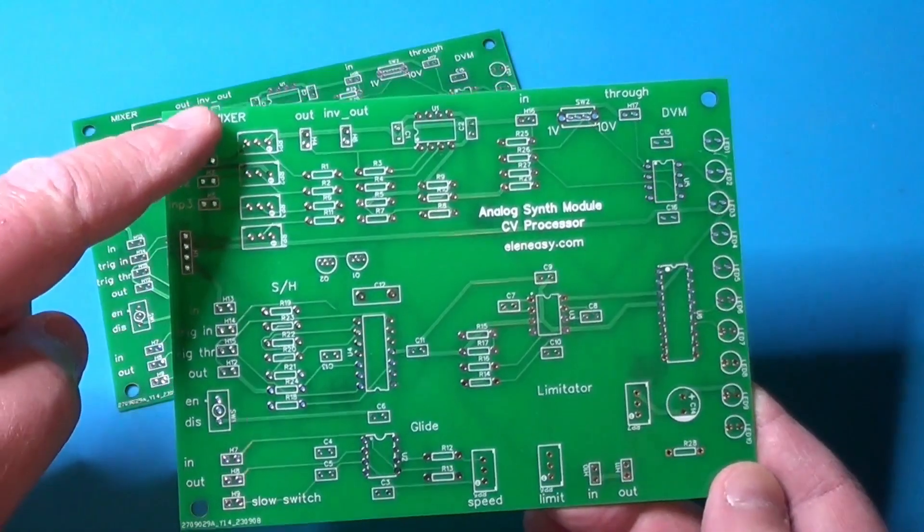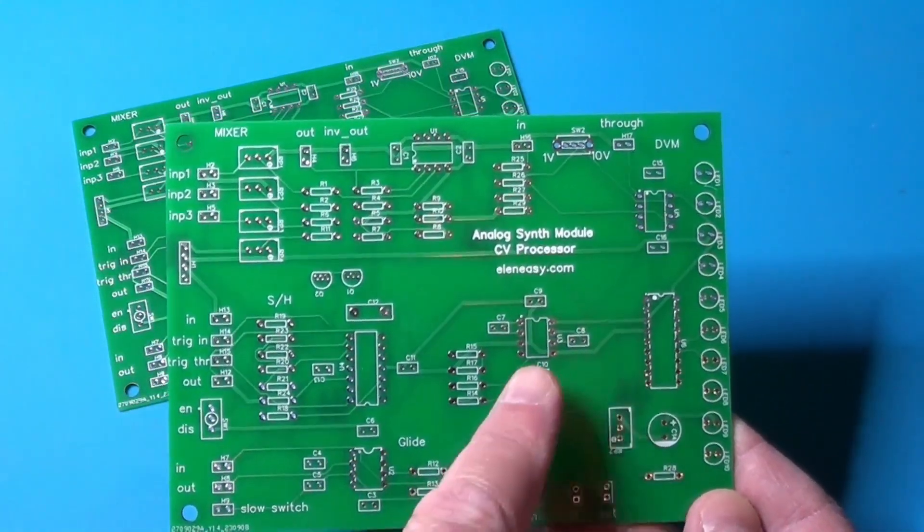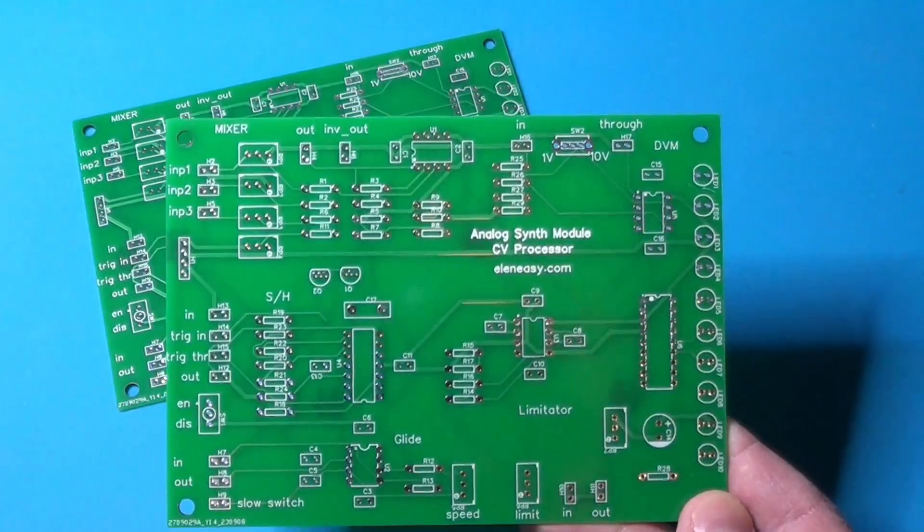And so we have one, two, three, four, and five elements all on the same PCB. This time, for the assembly of the PCB, since we have five totally independent circuits on the same PCB, I decided to mount them one at a time and test them right away before starting to mount the next element.